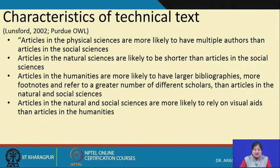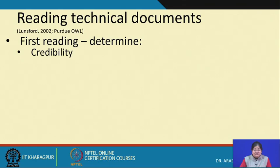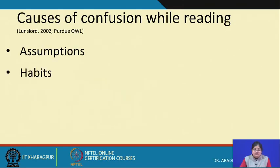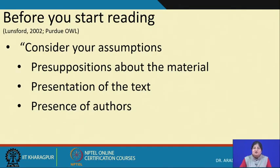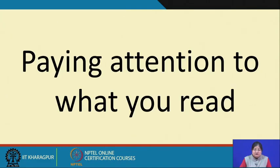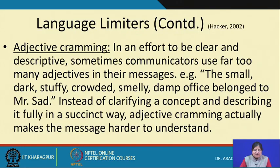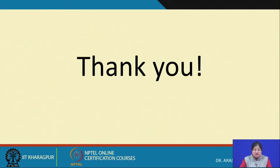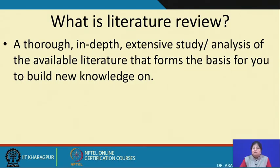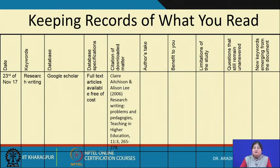We discussed two broad categories of documents — characteristics of technical texts and identifying structural elements of technical documents. Then we discussed reading technical documents: how do you start reading them, how do you make sense of them, causes of confusion while reading, how do you prepare yourself, how do you assess an argument. Then we talked about paying attention to what you read, various contexts of meaning, different types of words, interpreting meanings, and different categories of words. We talked about language limiters and then one method of keeping your literature review records in place.